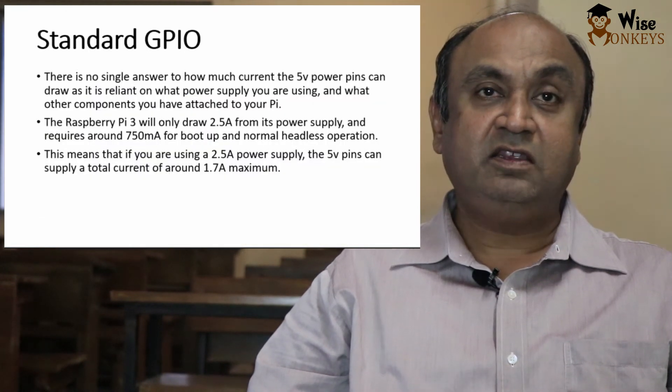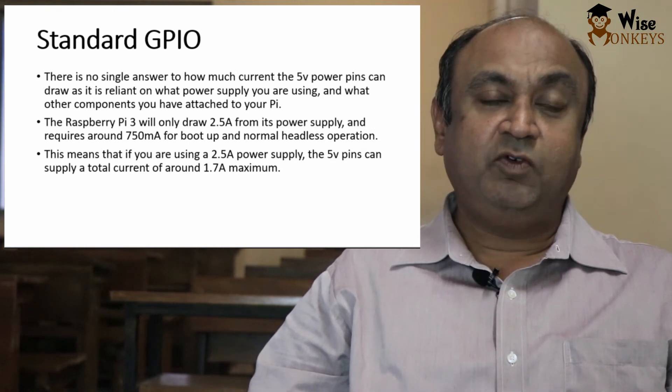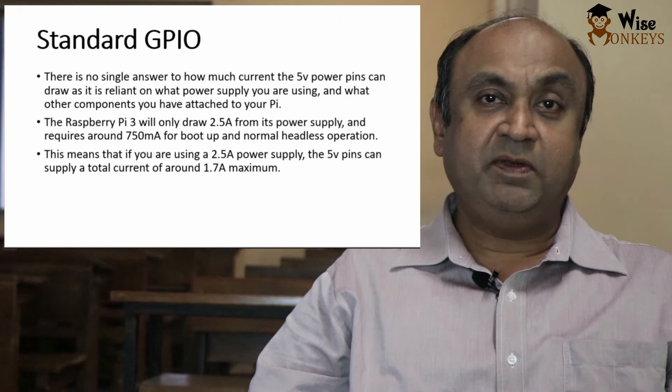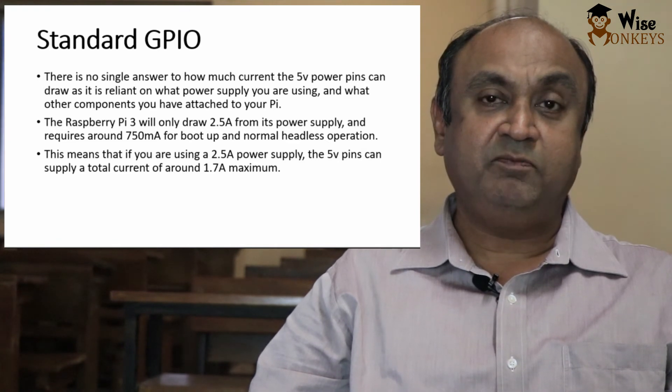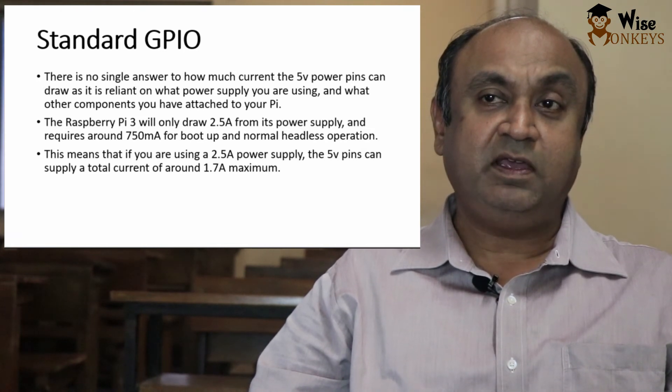The standard GPIO. There is no single answer to how much current the 5 volt power pins can draw as it will depend on what power supply we are using and what other components we have attached to the Pi. The Raspberry Pi 3 will draw only 2.5 ampere from its power supply and requires around 750 mAh for boot up and normal headless operations. This means if we are using a 2.5 ampere power supply, the 5 volt pins can supply a total current of around 1.7 ampere maximum.